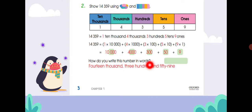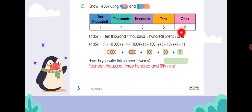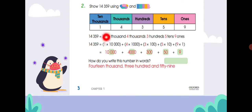You have given them in words and expanded form. You can use the discs or the place value chart to solve the numbers. The number shown is 14,359. We will start from 9: 9 is on the ones place, 5 is on the tens place, 3 is on the hundreds place, 4 thousands, and 1 ten thousand.